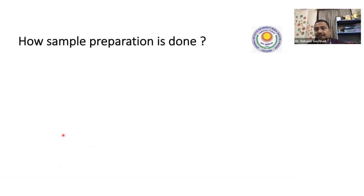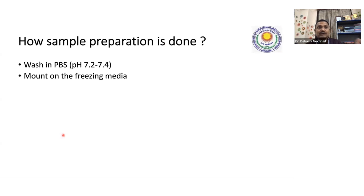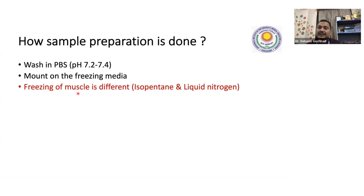How is sample preparation done? You need not know every detail, but you must know we do not use formalin for IF. We keep it in fresh condition — in normal saline or Mitchell's medium. We then freeze it: for skin and kidney biopsies the tissue is frozen inside the cryostat, but for muscle biopsy, freezing is done with the help of isopentane and liquid nitrogen — called snap freezing. Isopentane and liquid nitrogen are used for snap freezing muscle biopsies, not for kidney and skin.